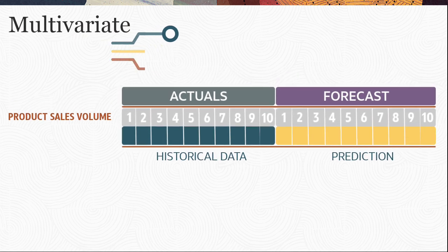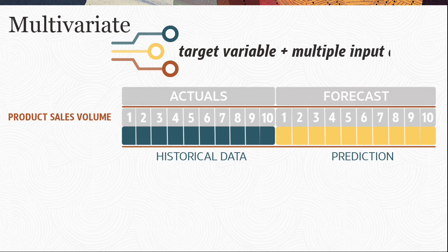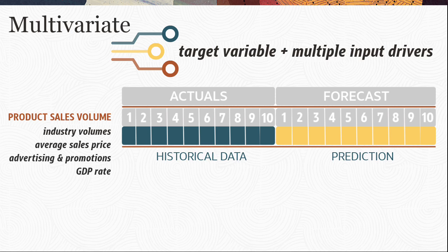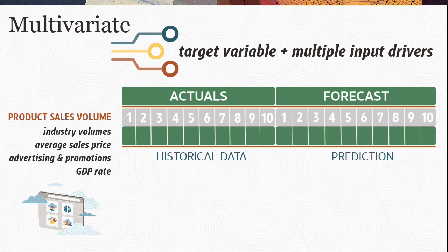Multivariate takes it a step further. It starts the same way where you take a target variable — in this case, product sales volume. Then you can include several other drivers or variables that correlate with your target variable. For example, we have industry volumes, average sales price, advertising and promotions, GDP rate, and so on. These drivers are managed in Cloud EPM. The algorithms will take the historical data for that variable and the drivers you included, as well as their what-if predictions, to create a more accurate prediction.